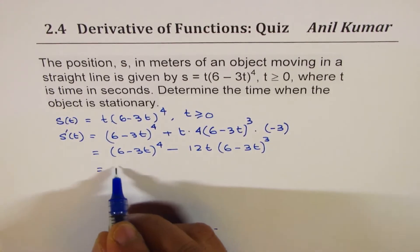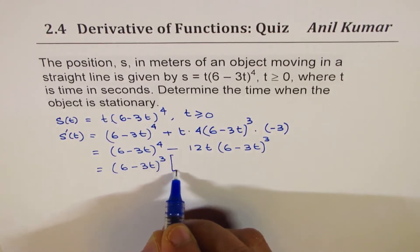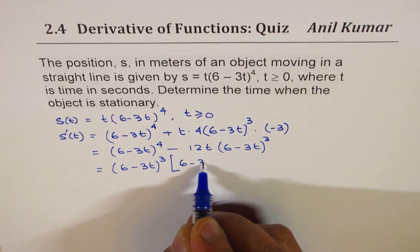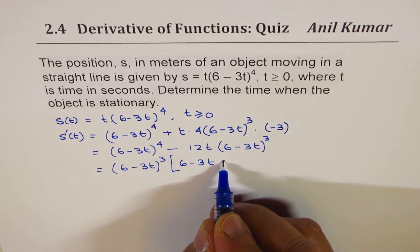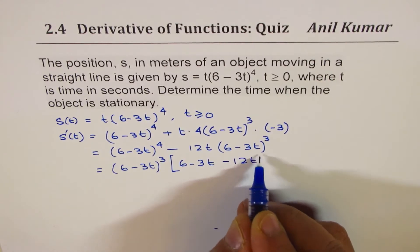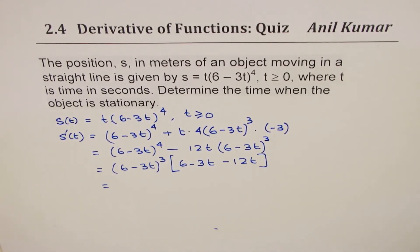You can take 6 minus 3t whole cube common, that gives you 6 minus 3t and here you get minus 12t.